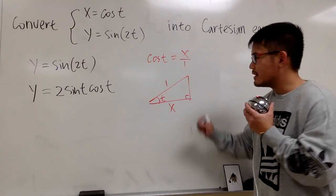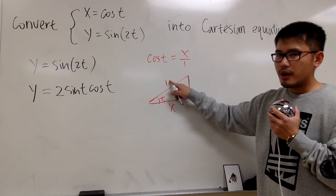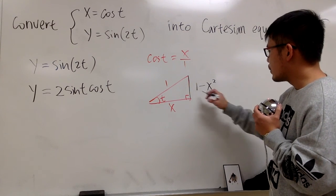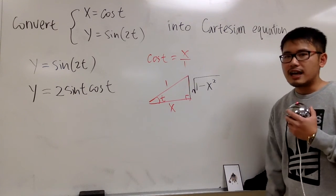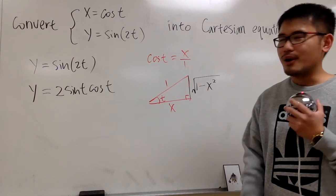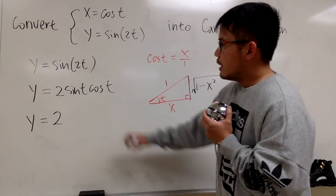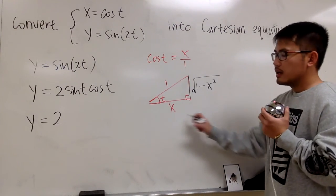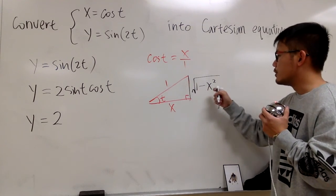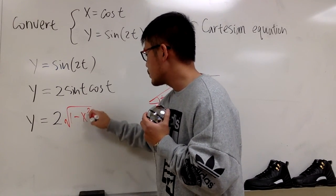Now let's figure out the third side. By the Pythagorean theorem, we take the square root of 1 squared minus x squared, which gives us the square root of 1 minus x squared. So we are ready to go. Sine t is opposite over hypotenuse — looking at the triangle, that's the square root of 1 minus x squared.